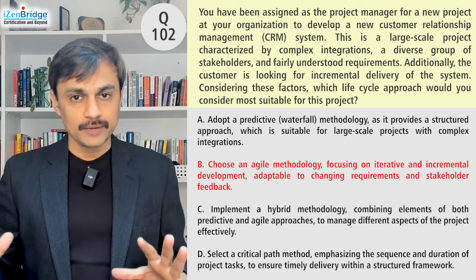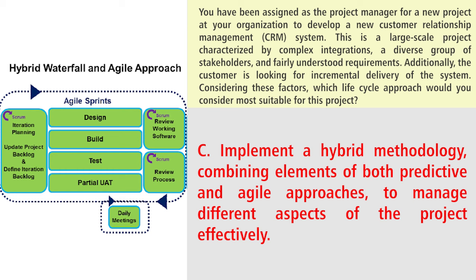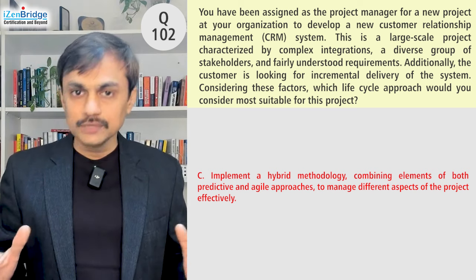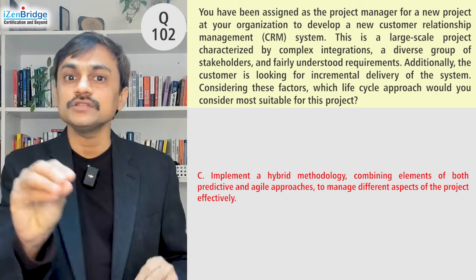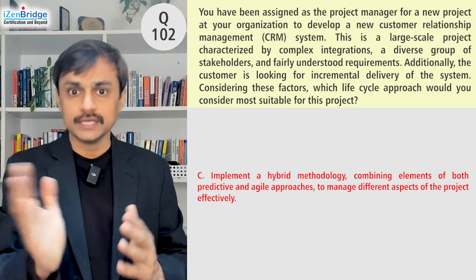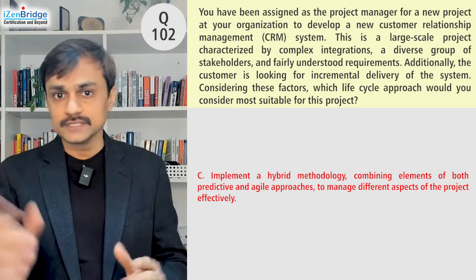Option C: implement a hybrid methodology combining elements of both predictive and agile approaches to manage different aspects of the project effectively. In general, hybrid can work in any situation. We don't know the exact composition — it could be 80% agile and 20% predictive — but we know a pure approach, whether adaptive or predictive, is not suitable here. By default in PMP exam questions, hybrid is usually the first choice. Option C looks great because it proposes a hybrid way of working.